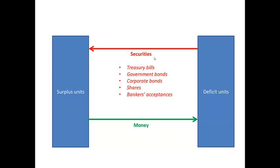Treasury bills would be issued by the government when it has a short term deficit. When the government is experiencing a long term deficit, it would issue government bonds. Companies can also issue corporate bonds or shares. When the surplus units take up shares, they now own a part of that company that issued the shares. Companies can also issue bankers acceptances, which is an example of a short term security that can be issued by a deficit unit.